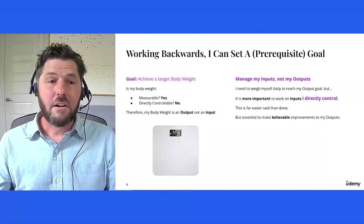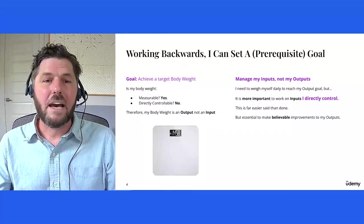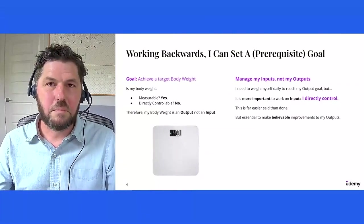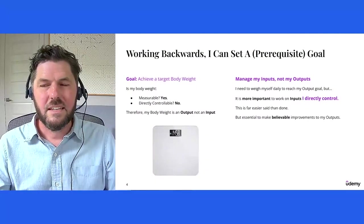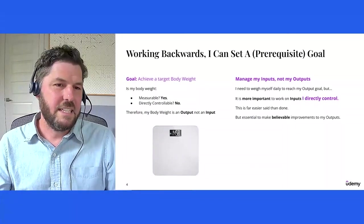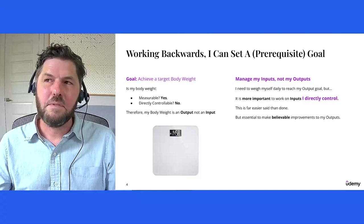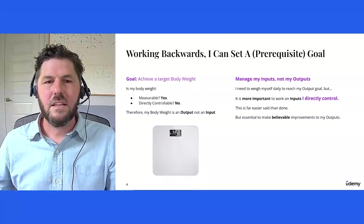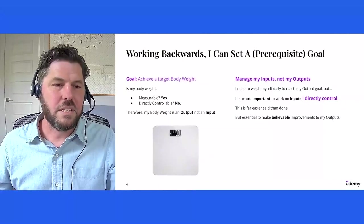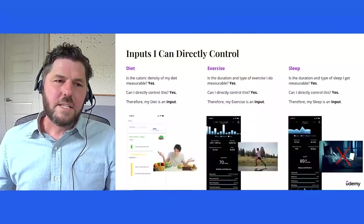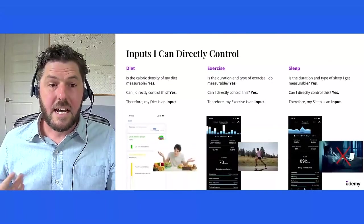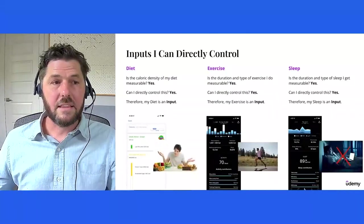We have to keep an eye on our outputs. So I need to weigh myself daily to reach my output goal. I need to keep an eye on it. But it's much more important for me to work on inputs I can directly control. This is much easier said than done, but it's absolutely essential. It's critical in order to make believable improvements that ladder up to the outputs that I want to achieve. So I can ask myself, what are some inputs that I do directly control that relate to this output, a target body weight, that I don't?